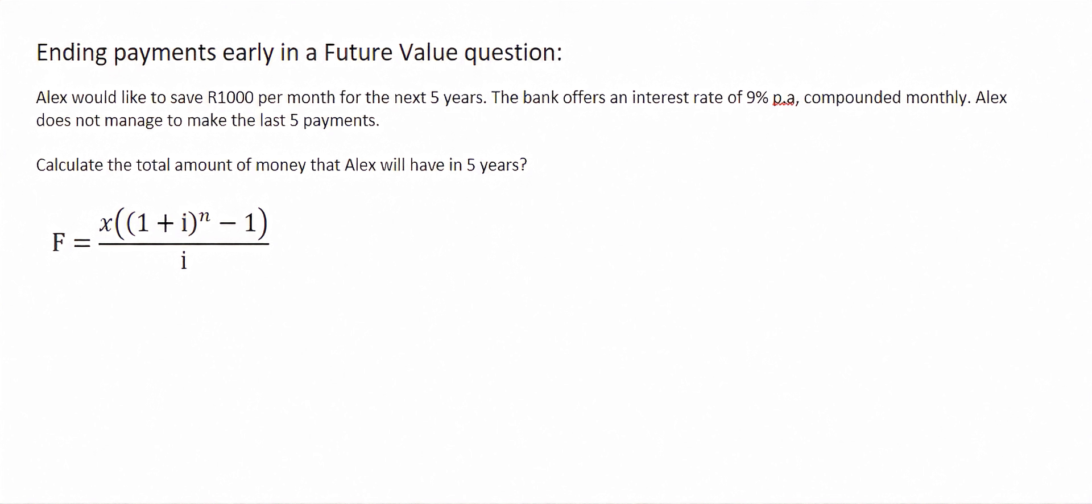If that is the case, then you simply take the number of years, which is five, and you multiply it by the compounding, which is monthly, so that's 12 times per year, and so your base number is 60. However, Alex does not manage to make the last five payments, so we're going to minus five, and so he's going to make 55 payments. We will assume that he starts paying at the correct time.